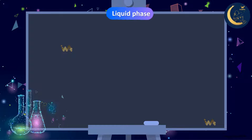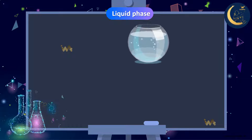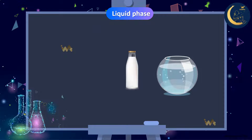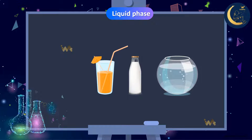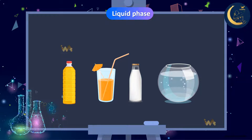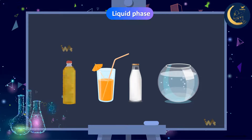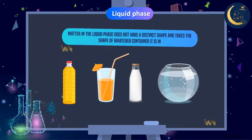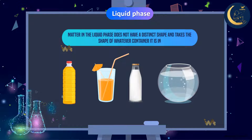Matter in the liquid phase includes water, milk, juice, and oil. However, does a liquid have a distinct shape? Great job — it does not. A liquid's shape changes with the container it is in. Here it looks like a bowl; here the liquid took the shape of this glass. So, my friends, liquid matter does not have a distinct shape — it takes the shape of the container it is in.